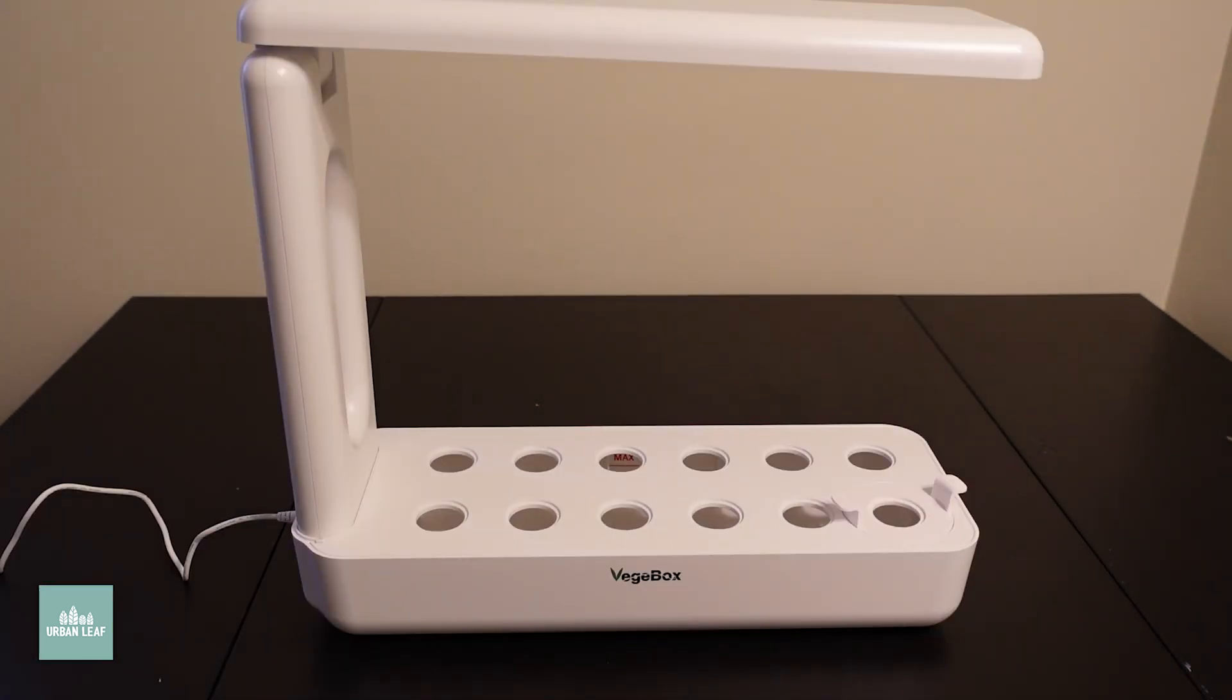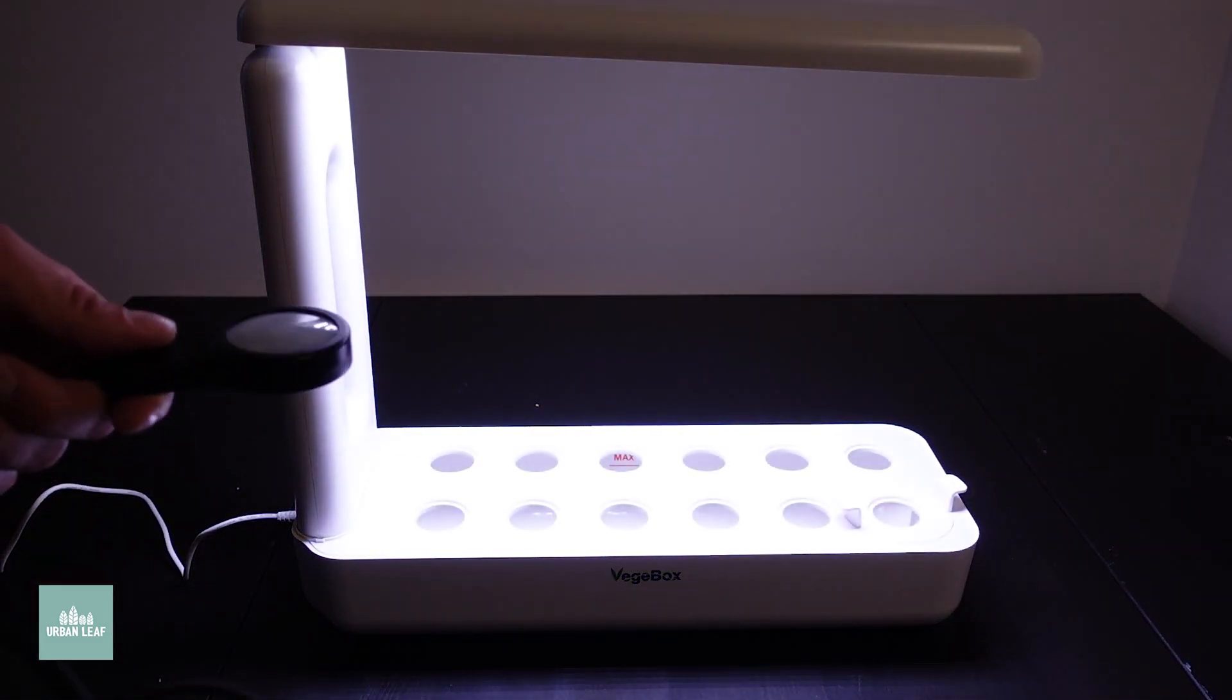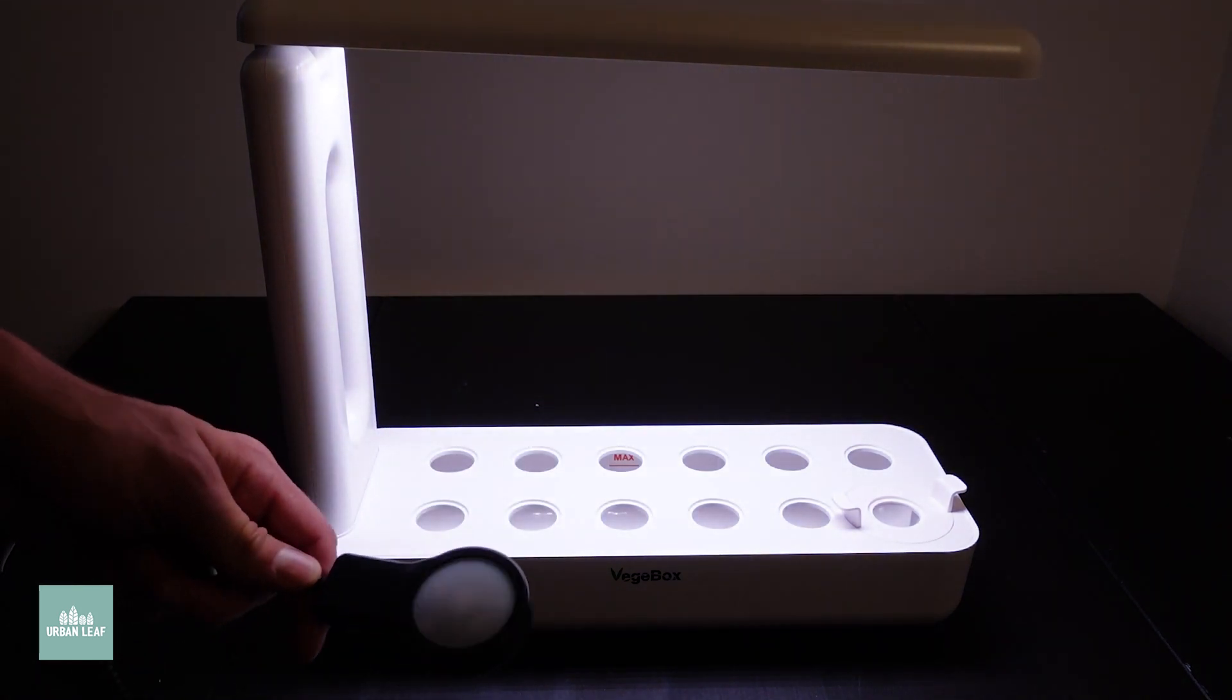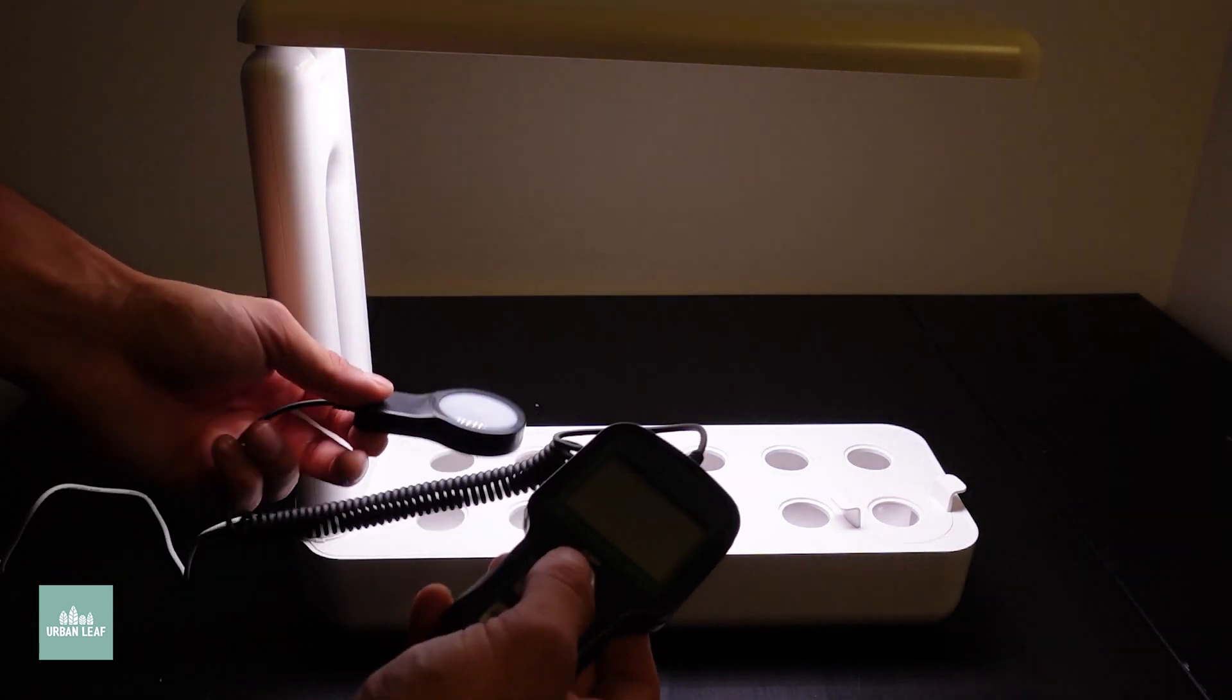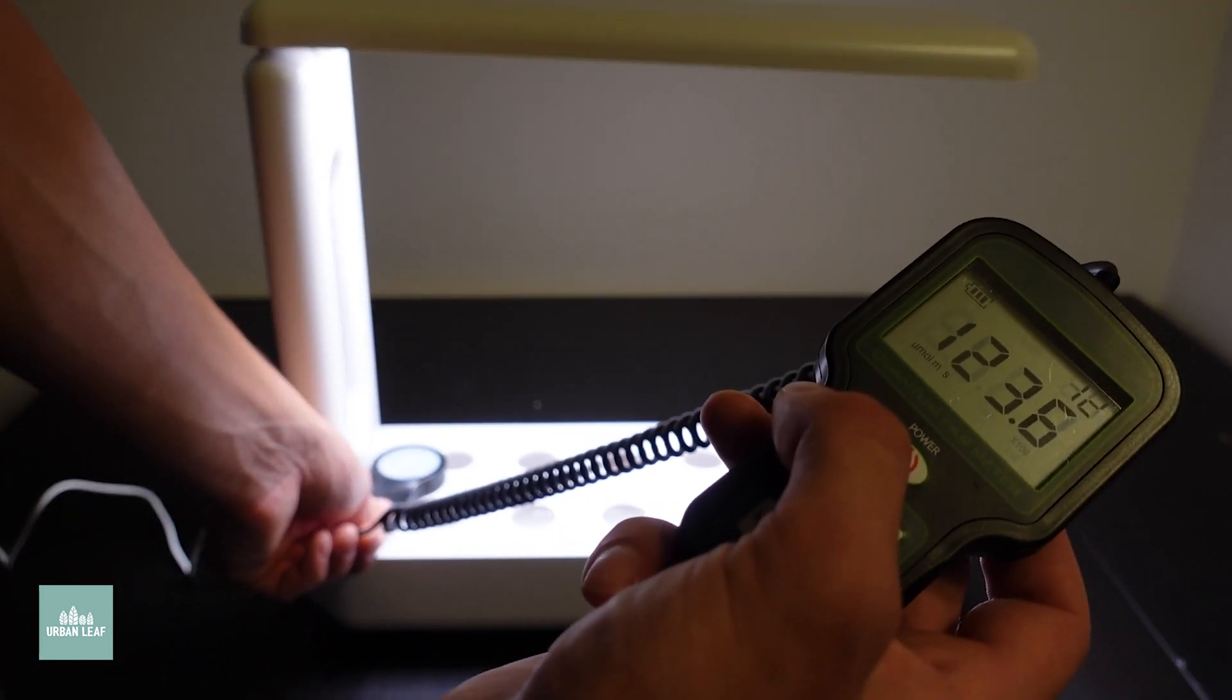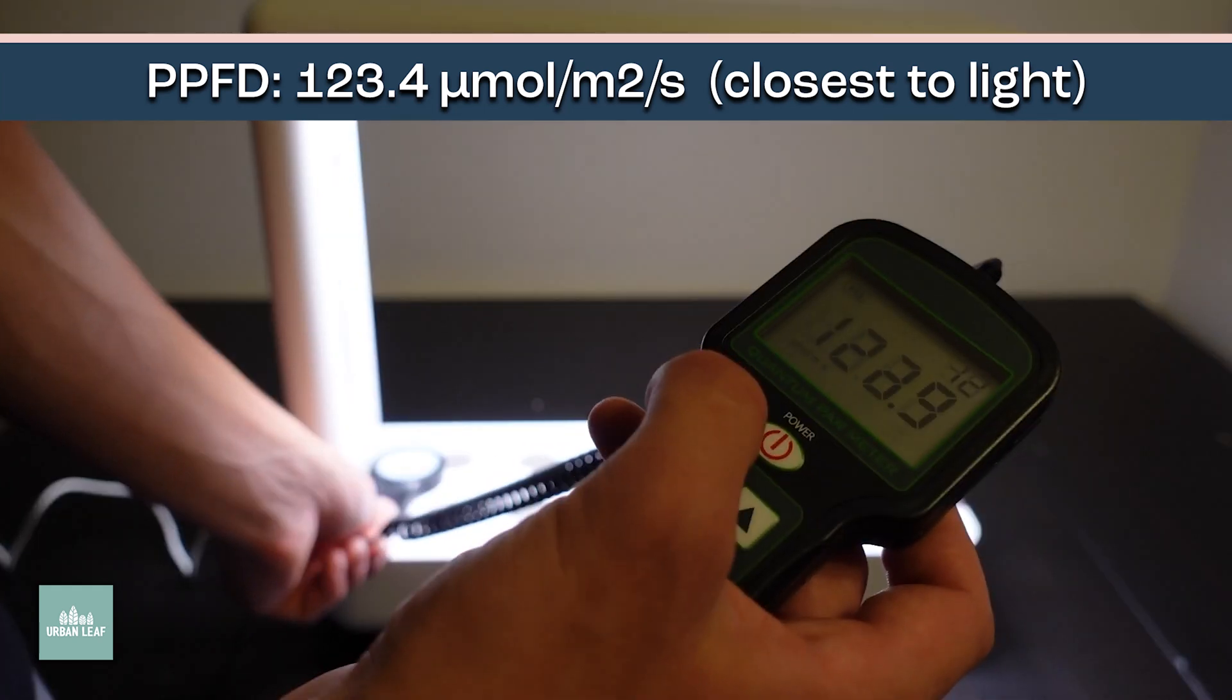So let's get some PAR readings on this thing. Once we turn it on, you can see the light is fairly bright and it says in the instructions there is a built-in timer. Not quite sure how many hours a day that'll run, but we will see when we actually put this thing to the grow trial test. But for now, let's just get a PAR reading. Right here, near the base of the light, we're getting a reading of mid 120 micromoles per meter per second.